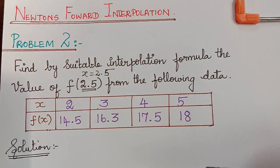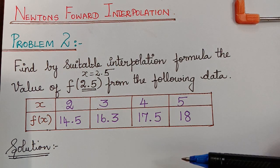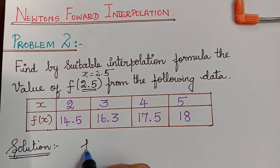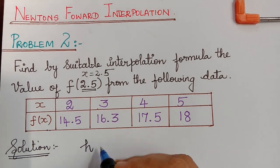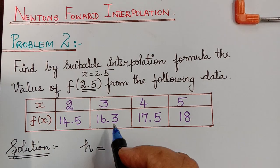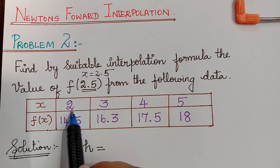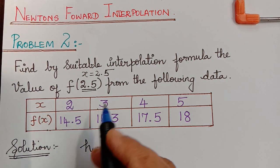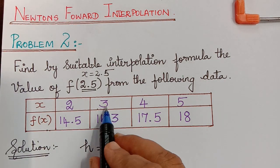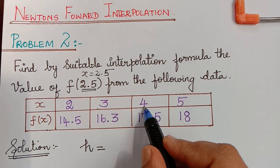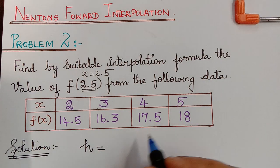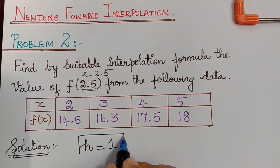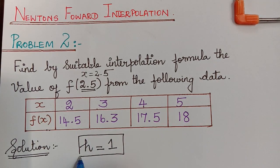As the first step, in order to use Newton's interpolation formula, we have to write the value of h, where h is equal to the length of the interval. That is, 3 minus 2 equals 1, or 4 minus 3, which equals 5 minus 4 — all give the value 1. So h is equal to 1.